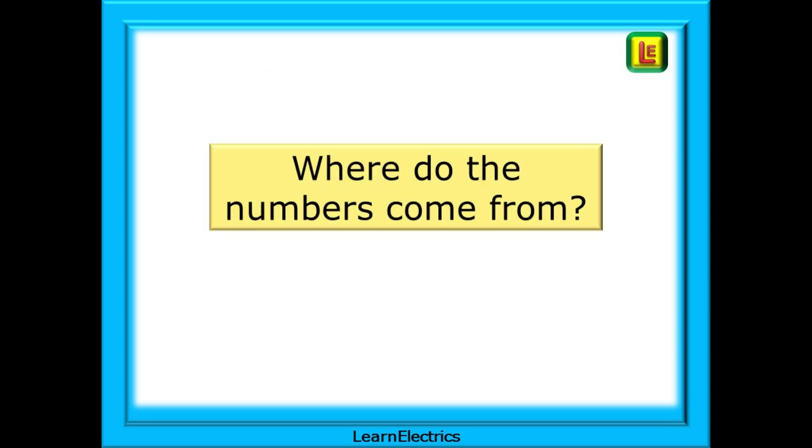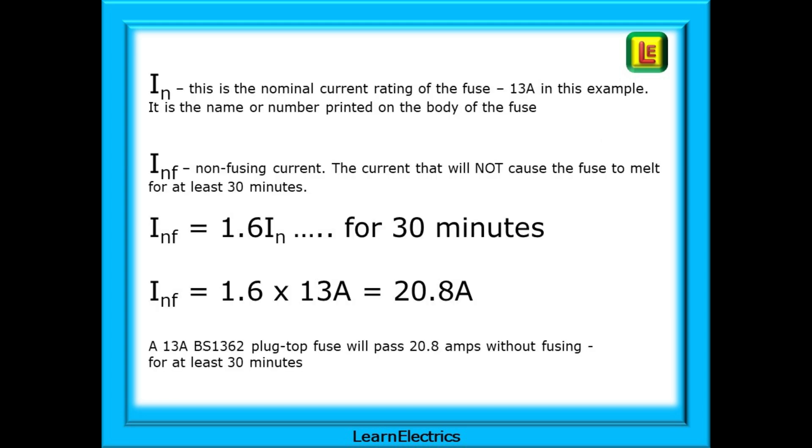The British Standard will quote certain numbers for the design and manufacture of the fuse, but where do the numbers come from? What do they mean? IN is the nominal current rating of the fuse, 13 amps, in this example. Think of the word nominal as meaning the name or number that is printed on the body of the fuse. Nominal, name, 13 amps.